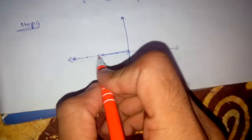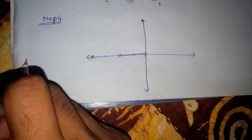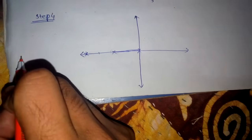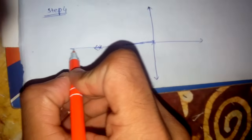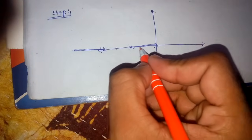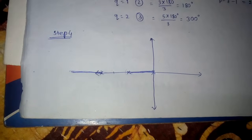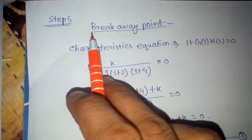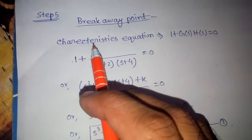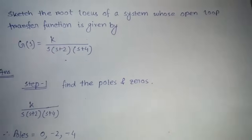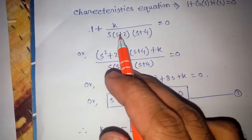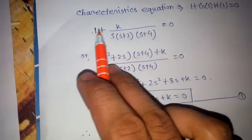Considering from minus 4 to negative infinity, there are three poles to the right of minus 4, which is odd, so there must be a root locus from minus 4 to negative infinity. So there are two root locus segments: one between 0 and minus 2, and one from minus 4 to negative infinity. Step 5: we find the breakaway point. For that we need the characteristic equation: 1 plus G(s)H(s) equals 0.